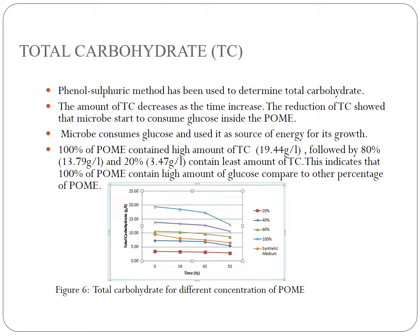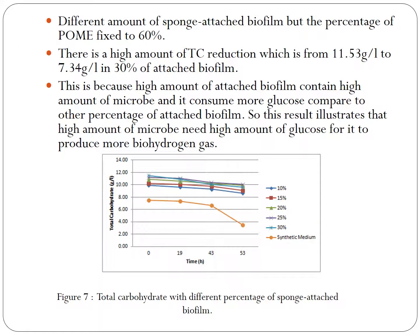Now for total carbohydrate analysis. The phenol-sulphuric acid method was used to determine total carbohydrate. The amount of total carbohydrate decreases as time increases, showing that microbes start to consume glucose inside the POME. From the graph of total carbohydrate for different concentrations of POME, 100% of POME contains the highest amount of glucose compared to other percentages. For total carbohydrate with different percentages of sponge-attached biofilm, there is a high amount of total carbohydrate reduction in the 30% attached biofilm. This is because high amounts of attached biofilm contain more microbes that consume more glucose. This illustrates that higher amounts of microbes require more glucose to produce more biohydrogen gas.